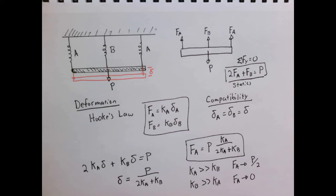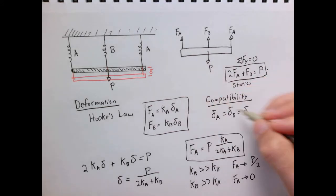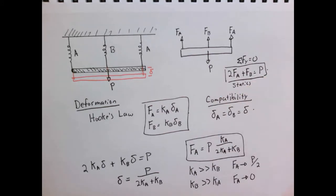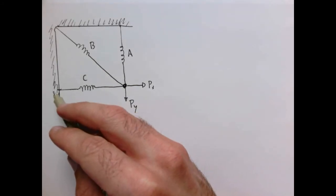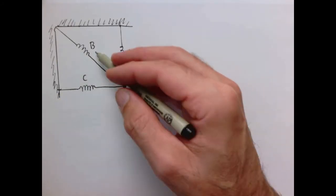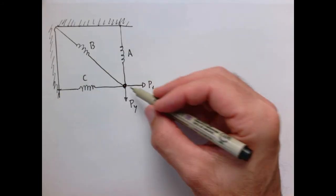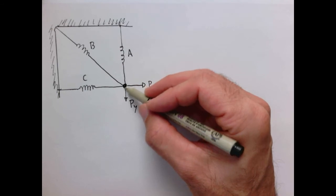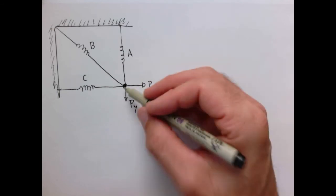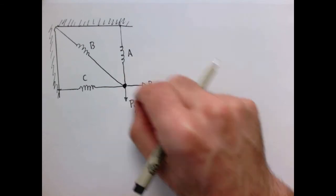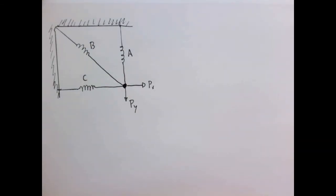Statically indeterminate structures always require statics, deformation, and geometric compatibility. Now let's look at a more complicated example. We have a corner rigid wall with three springs A, B, and C. We'll pull on them at their node with an arbitrary load that has X and Y components, pulling generally downward.